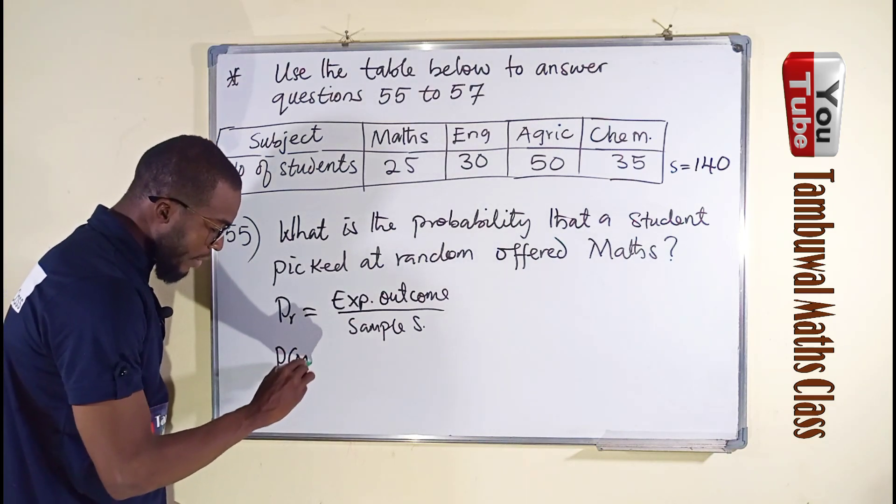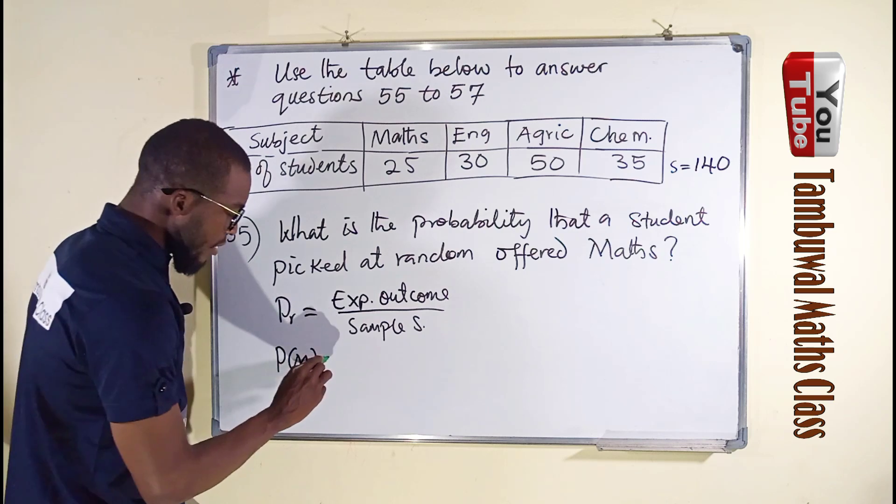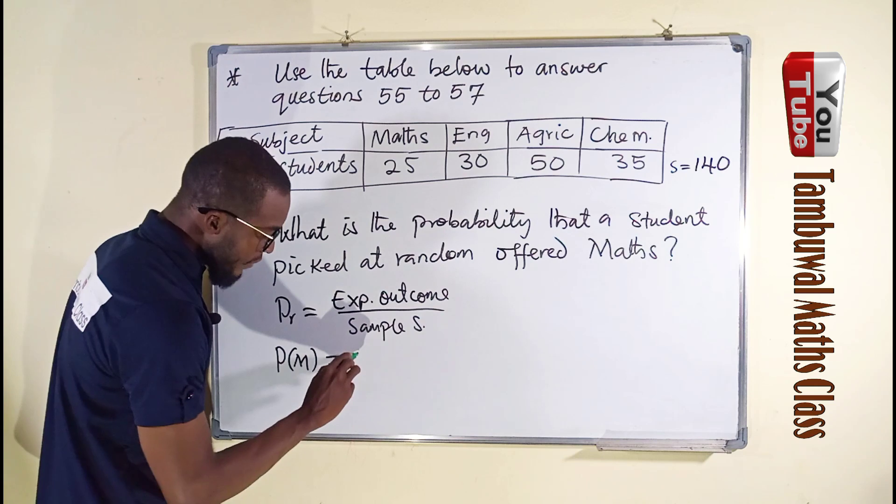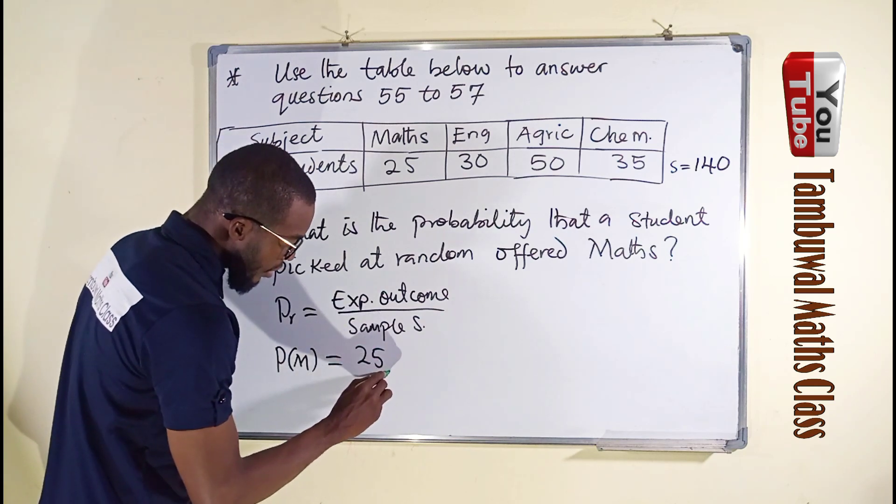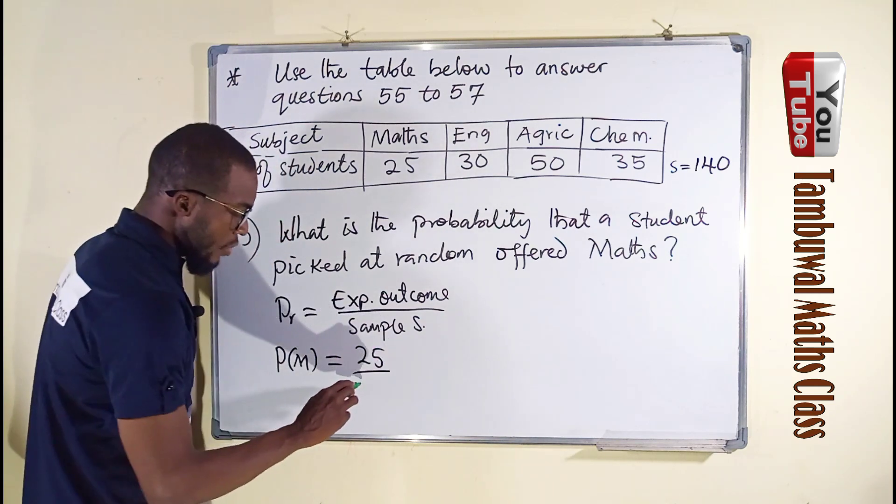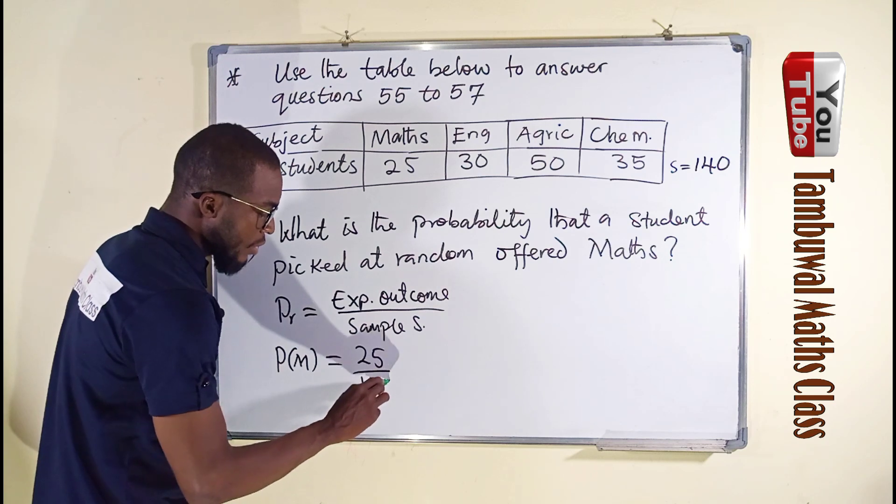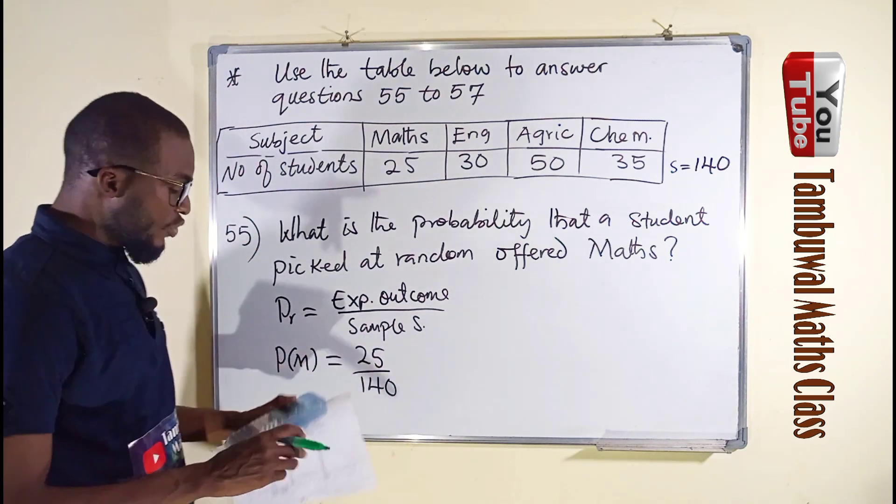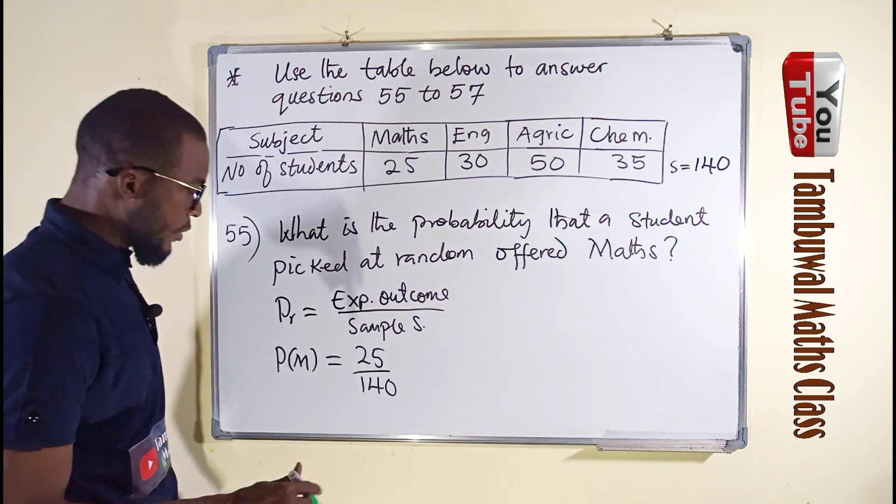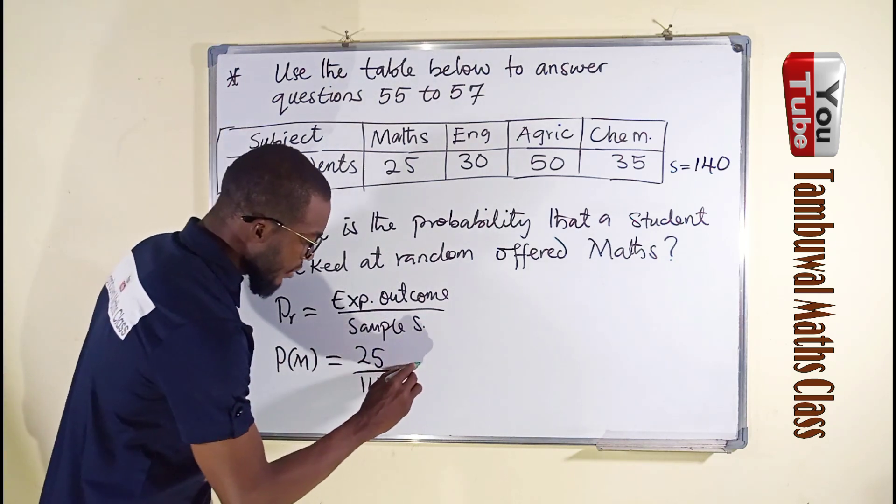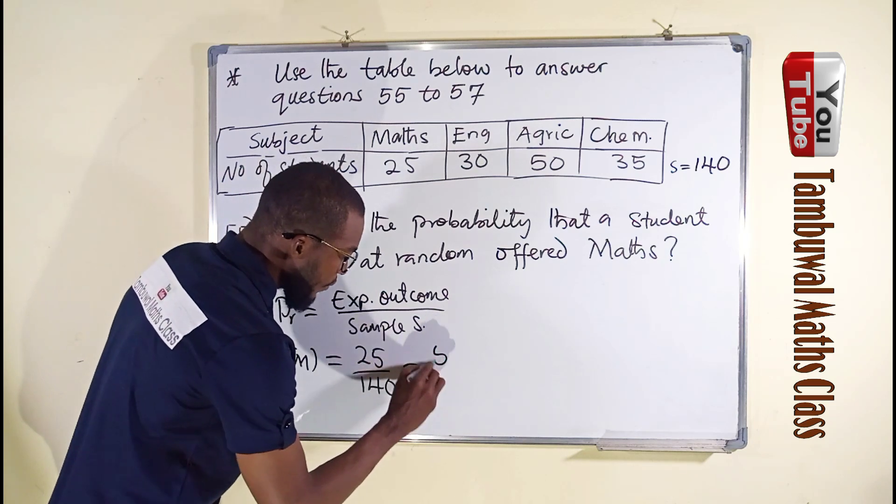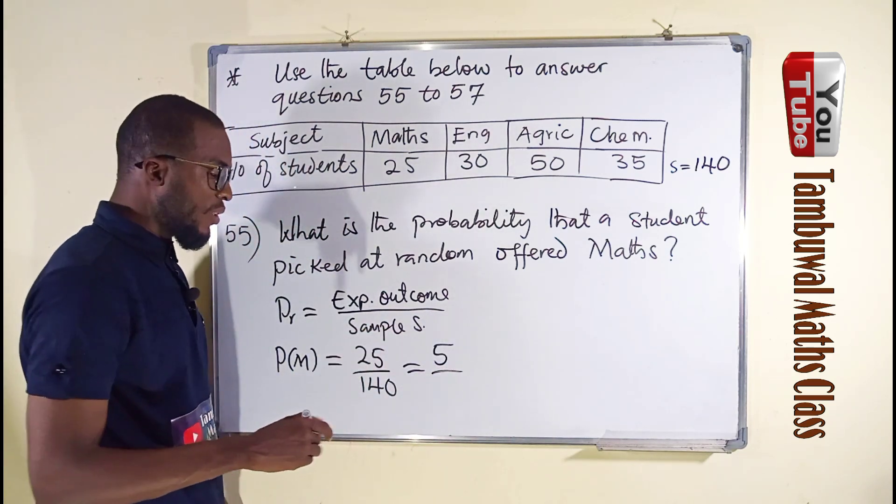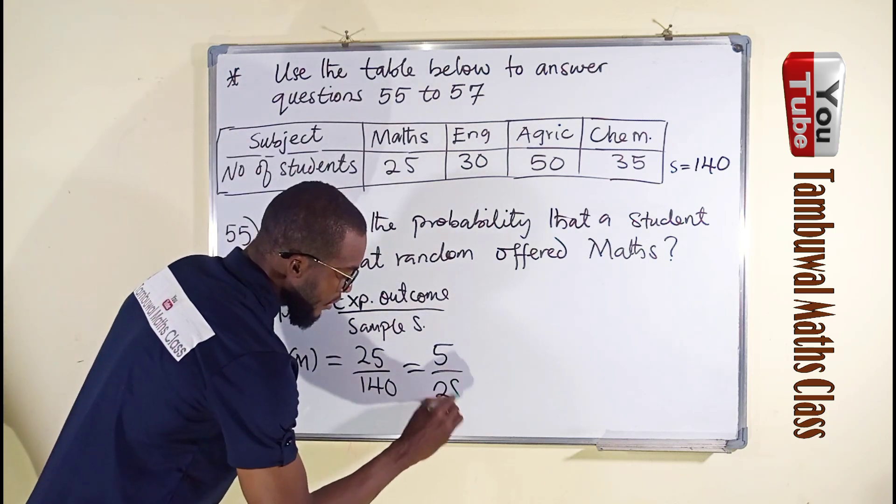Therefore, the probability P(m) - let me call it m for mathematics - is equal to the expected outcome, which we have here as 25 out of 140. Now let us reduce it to the lowest term: 5 can go into 25 five times and 5 can go into 140 twenty-eight times.